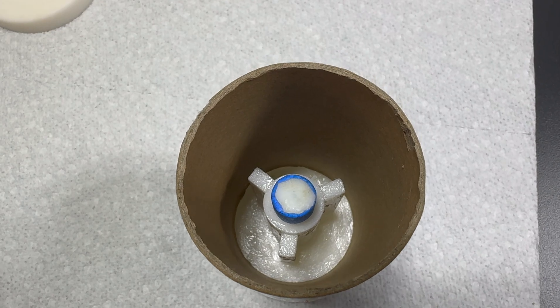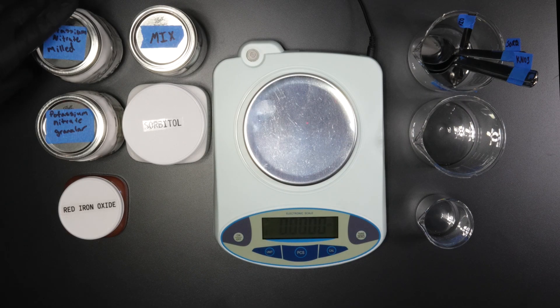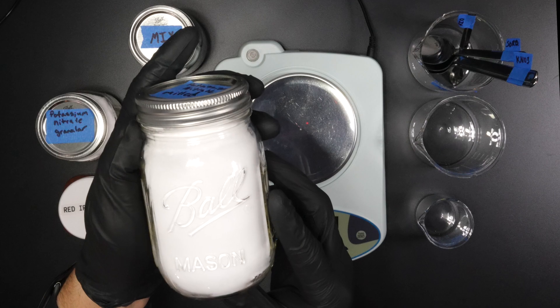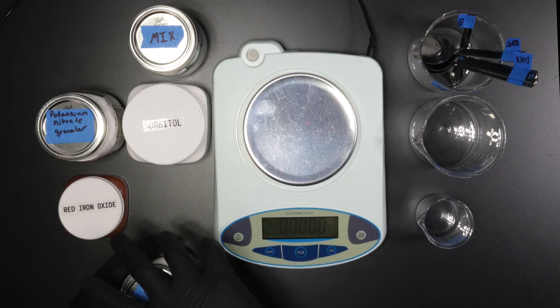With prep done, it's time to cast the propellant. To start, I measure out 34.13 grams of milled potassium nitrate. Quick tip: since we're doing multiple pours, label your containers to avoid chemical cross-contamination.